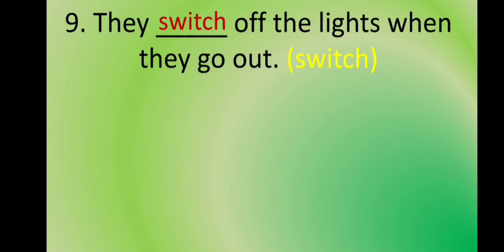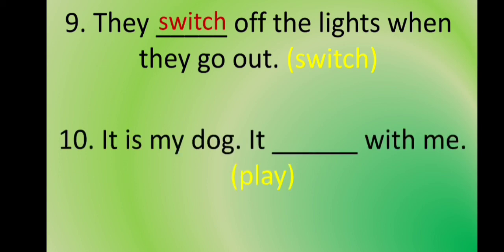The last statement is: It is my dog. It ___ with me. The verb is 'play.' The subject is 'it,' which is singular, so we use the S form of the verb. The answer is: It is my dog. It plays with me.